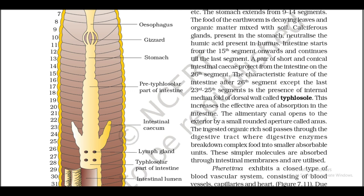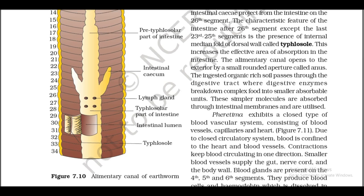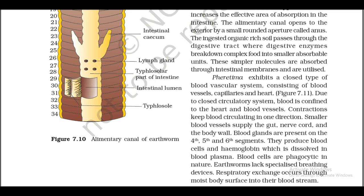A pair of short conical intestinal caeca project from the intestine on the 26th segment. The characteristic feature of the intestine after the 26th segment is the presence of an internal median fold of the dorsal wall called the typhlosole, which increases the effective area of absorption. The alimentary canal opens to the exterior by a small rounded aperture called the anus. The ingested organic-rich soil passes through the digestive tract where digestive enzymes break down complex food into smaller absorbable units.